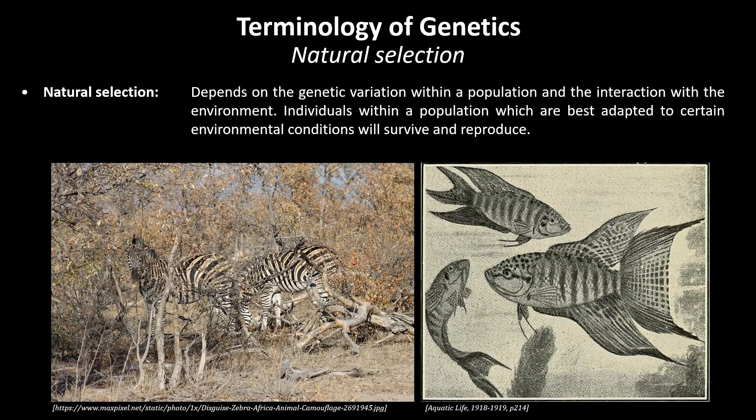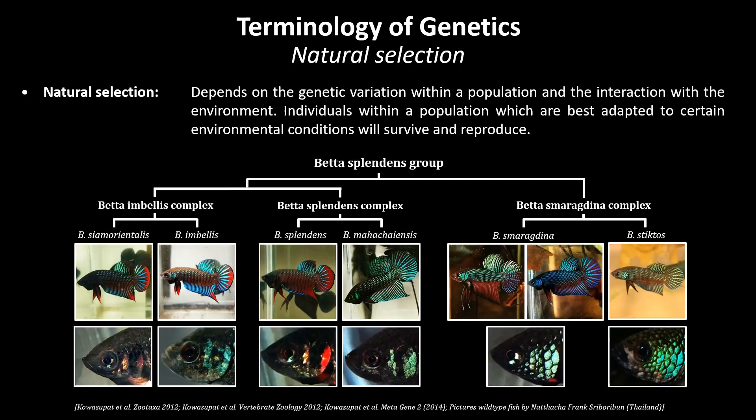Natural selection is the driving force behind evolution. The variation within the betta splendens group results from natural selection and likely originated from a common ancestor due to geographical isolation.